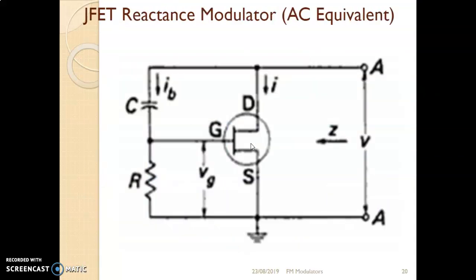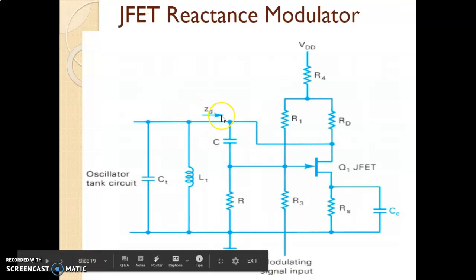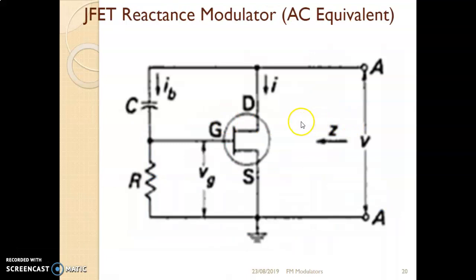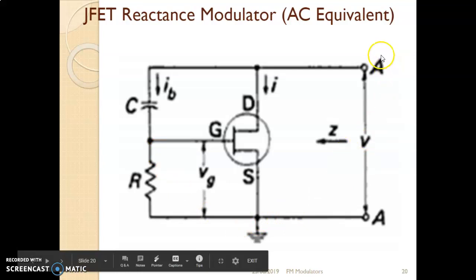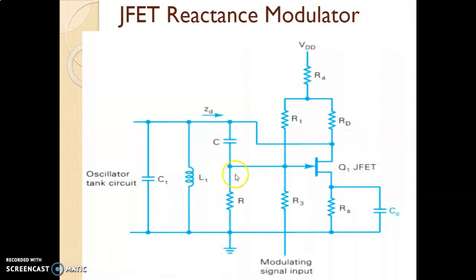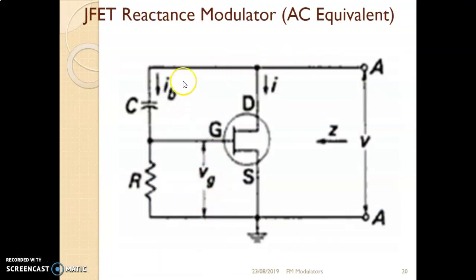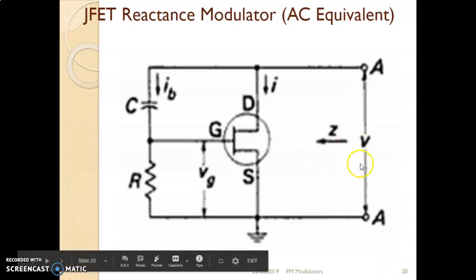This diagram can be redrawn as an AC equivalent circuit. In the AC equivalent, the same circuit is viewed from a different side with impedance measured from terminal AA. The terminals — gate, source, and drain — are marked. There is a capacitor between drain and gate, and a resistor between gate and source. The gate voltage is marked VG, and we calculate impedance looking from terminal AA with a supply voltage applied.